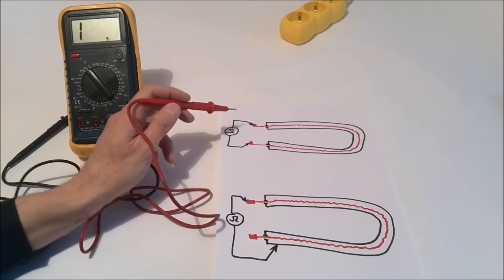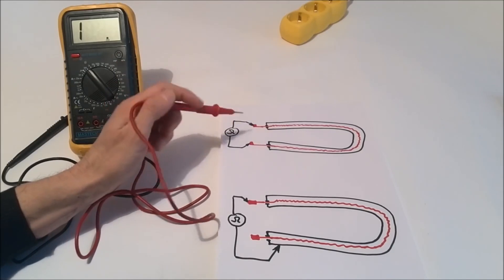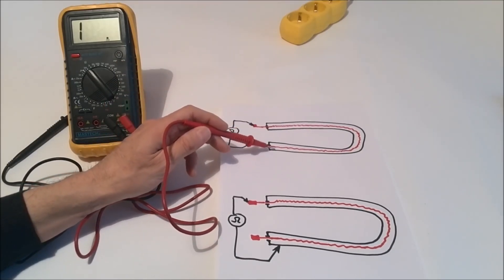When we have a functional heater, the first condition is that the heating thread must not be interrupted and the second condition is that it must not be in contact with the outer pipe.